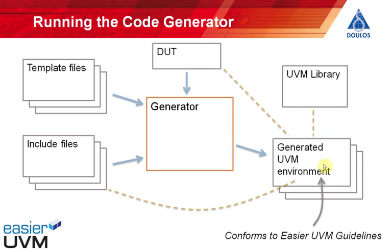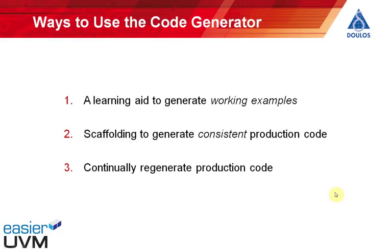All the generated code conforms to the Easier UVM guidelines. There are a number of ways you can use the code generator. You can get a lot of benefit by using it simply as a learning aid — not everybody will want to use a code generator to generate production code, but you can use it just to get started. The cool thing is that it generates actual working code specific to your particular design under test, which can be great for convincing both yourself and your manager that it is possible to get complete working UVM environments up and running relatively quickly.